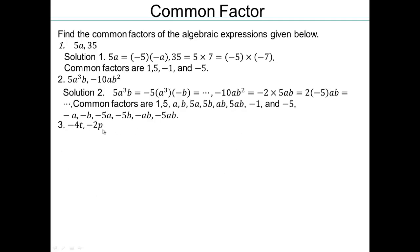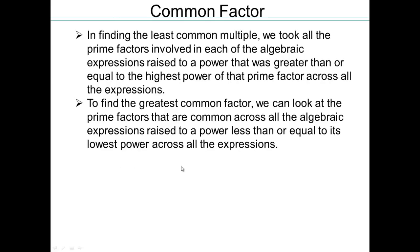What about these two expressions? They share a 2, so the common factors are 2, negative 2, 1, or negative 1. When finding least common multiple, we looked at all the factors and picked the highest power. In order to find a common factor, we pick factors that are common to all the expressions.